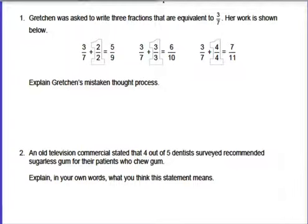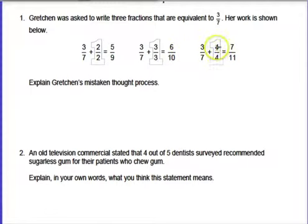Now we're going to take a look at this example — this should be the first page in book 11. If you haven't put your name on the front cover, put your name on it now and open to the page that has this on it. Gretchen was asked to write three fractions equivalent to three-sevenths. Her work shows: three-sevenths plus two-over-two equals five-ninths, three-sevenths plus three-over-three equals six-tenths, and three-sevenths plus four-over-four equals seven-elevenths. That was her idea of how to write equivalent fractions.